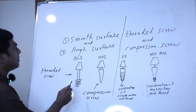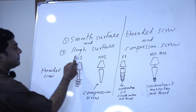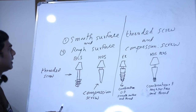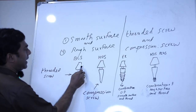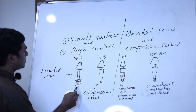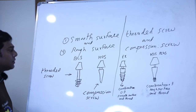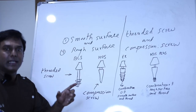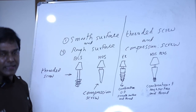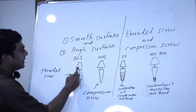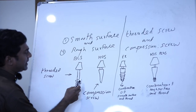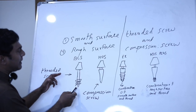Now let us talk about BCS first. These are predominantly smooth surface implants. The abutment head is at the top, then you have a shank, and then you have a threaded screw. It is only the threaded screw that engages the bone. This area does not have much bone-to-implant contact, and the load is completely transmitted by these threads in the apical area.